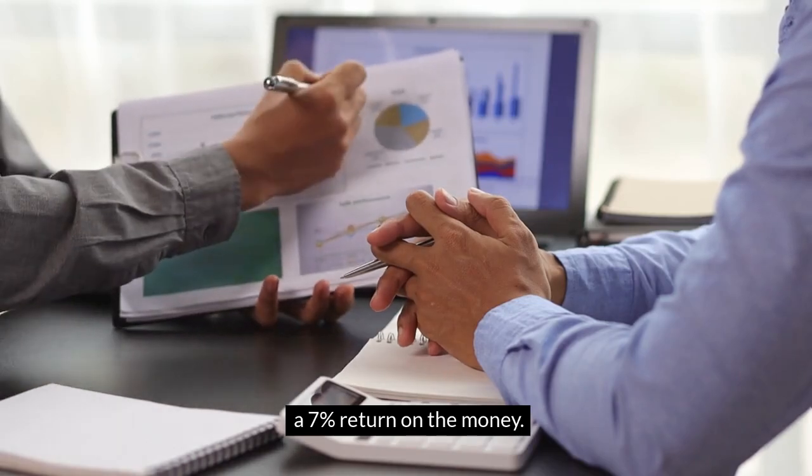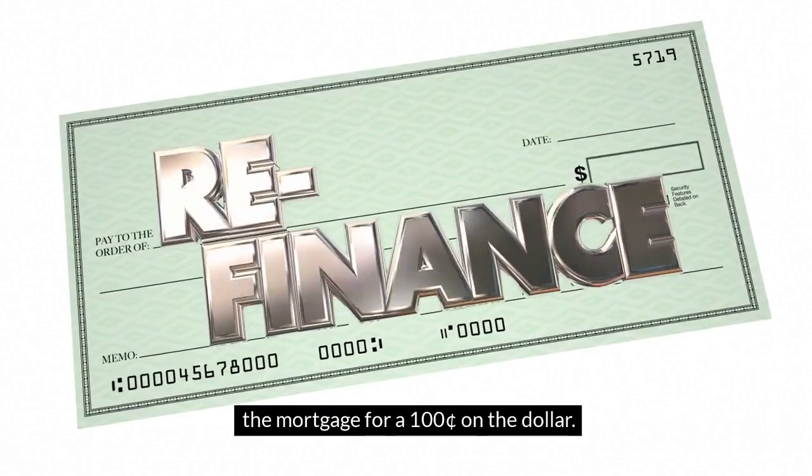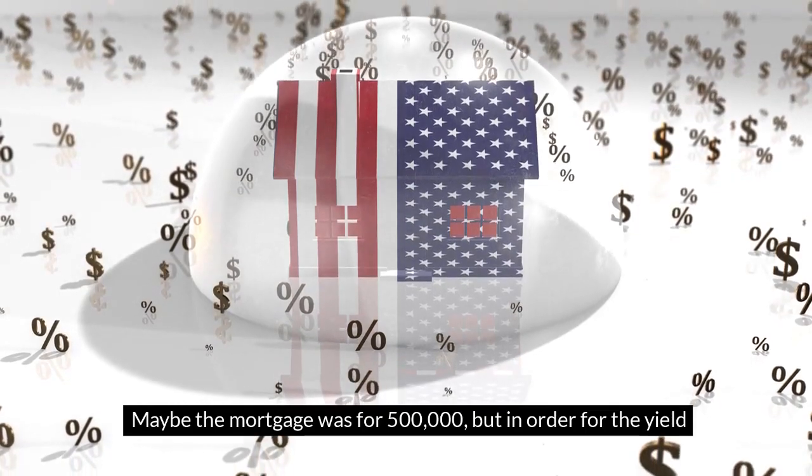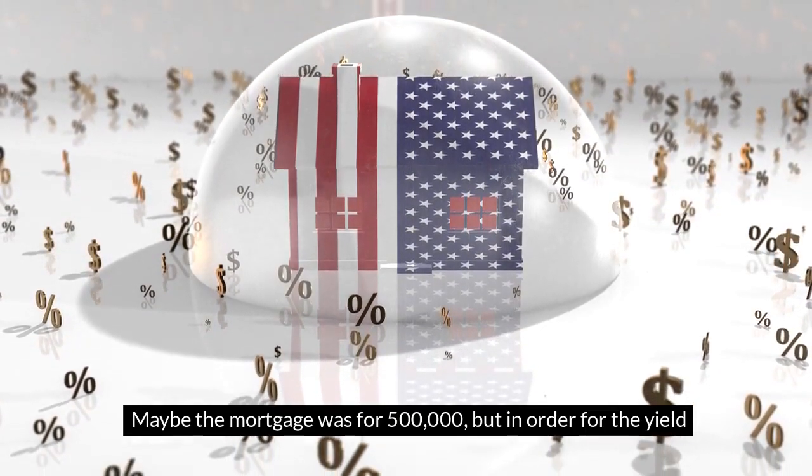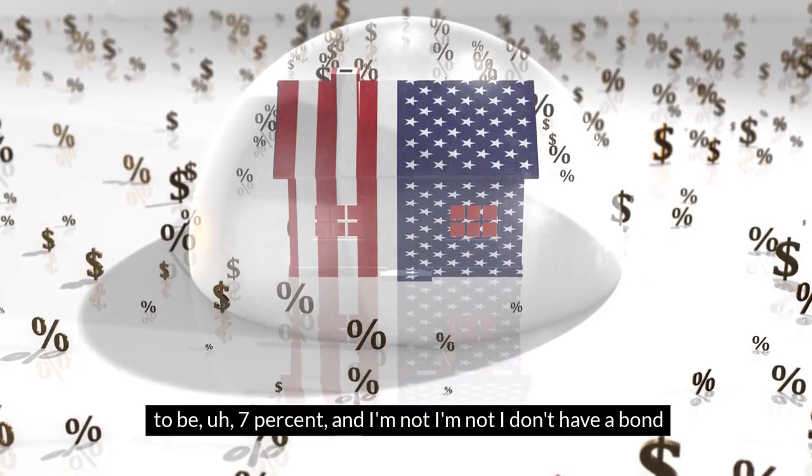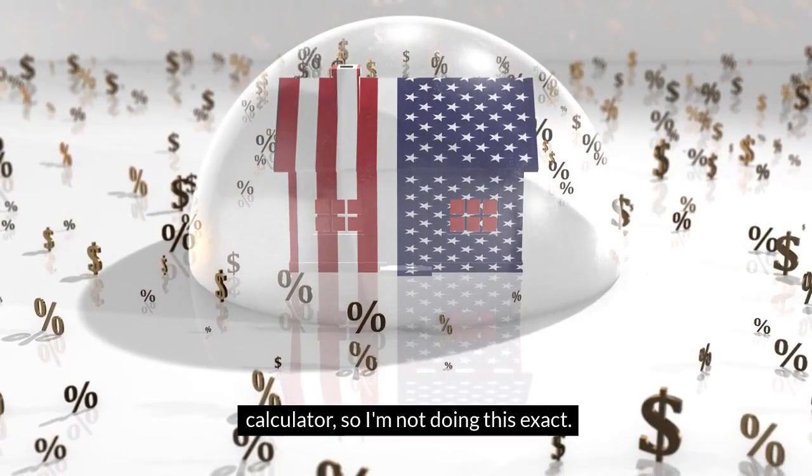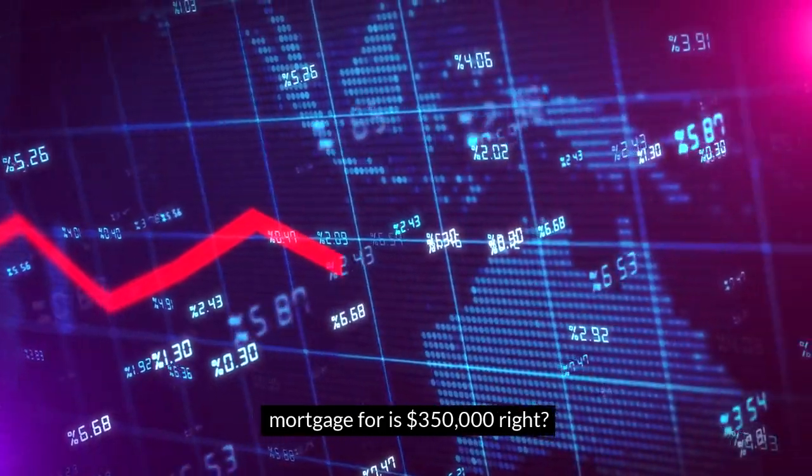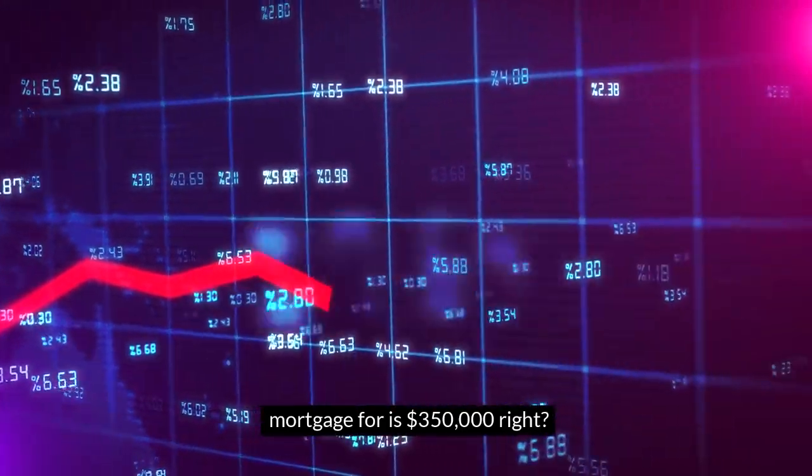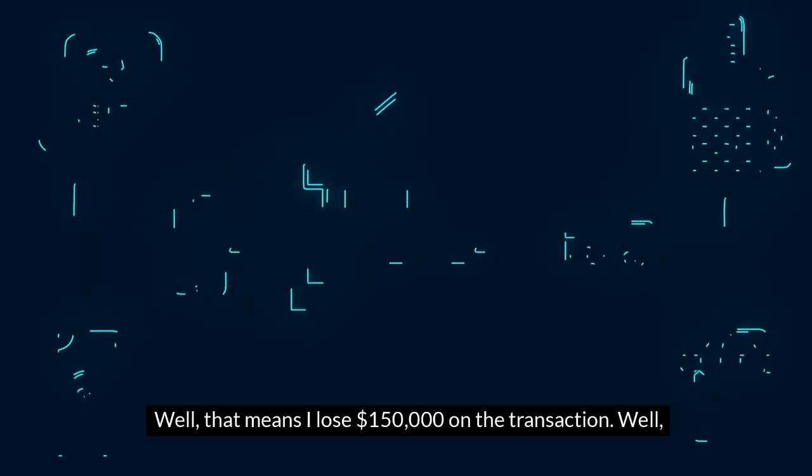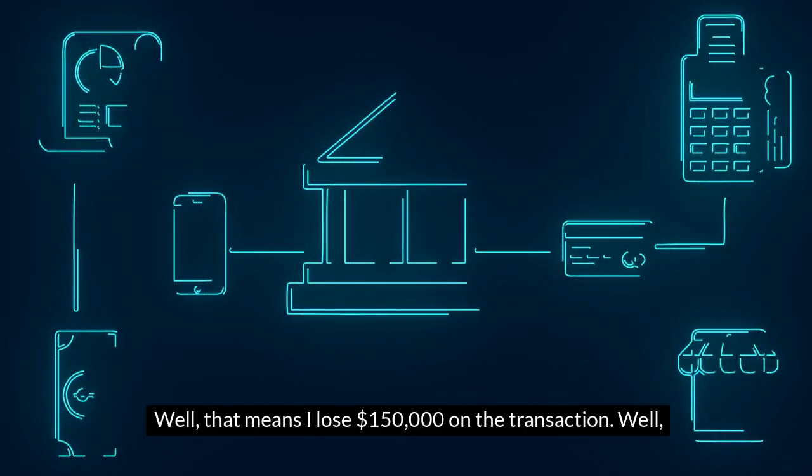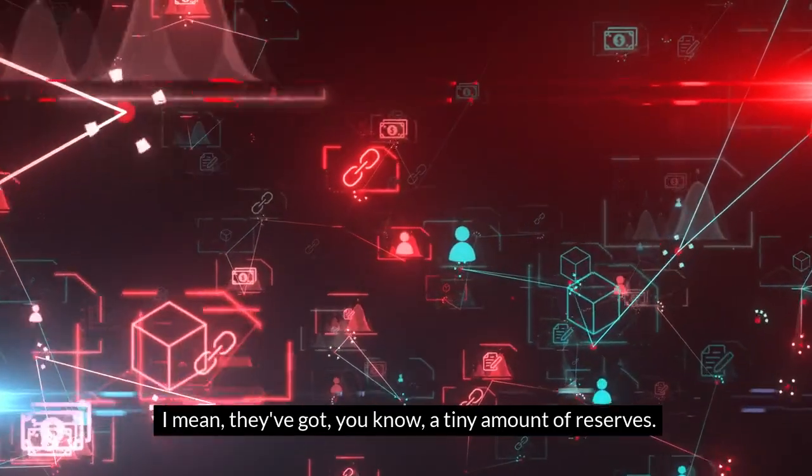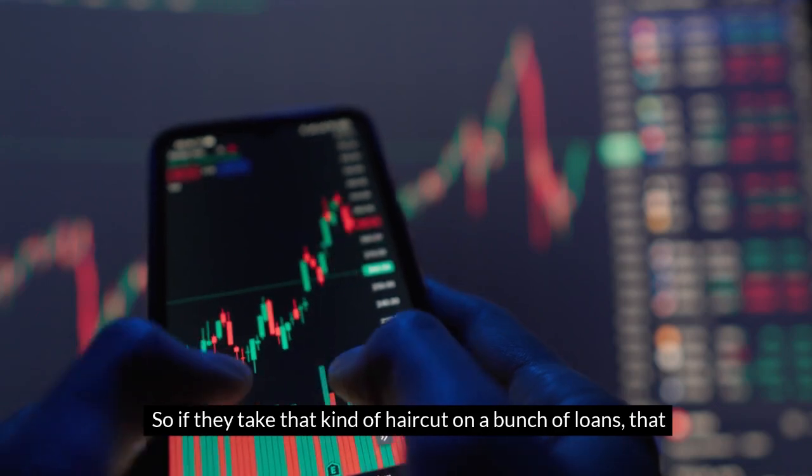That means I can't sell the mortgage for a hundred cents on the dollar. Maybe the mortgage was for five hundred thousand, but in order for the yield to be seven percent—I don't have a bond calculator so I'm not doing this exact—but let's say in order to get that yield, the most I can sell that mortgage for is three hundred fifty thousand dollars. Well, that means I lose one hundred fifty thousand dollars on the transaction. These banks are highly leveraged—they've got a tiny amount of reserves. If they take that kind of haircut on a bunch of loans, that could wipe out all their capital.